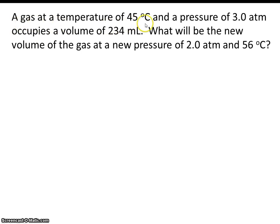A gas at a temperature of 45 degrees C and a pressure of 3 atmospheres occupies a volume of 234 milliliters. So that's our initial conditions: our initial temperature, pressure, and volume.